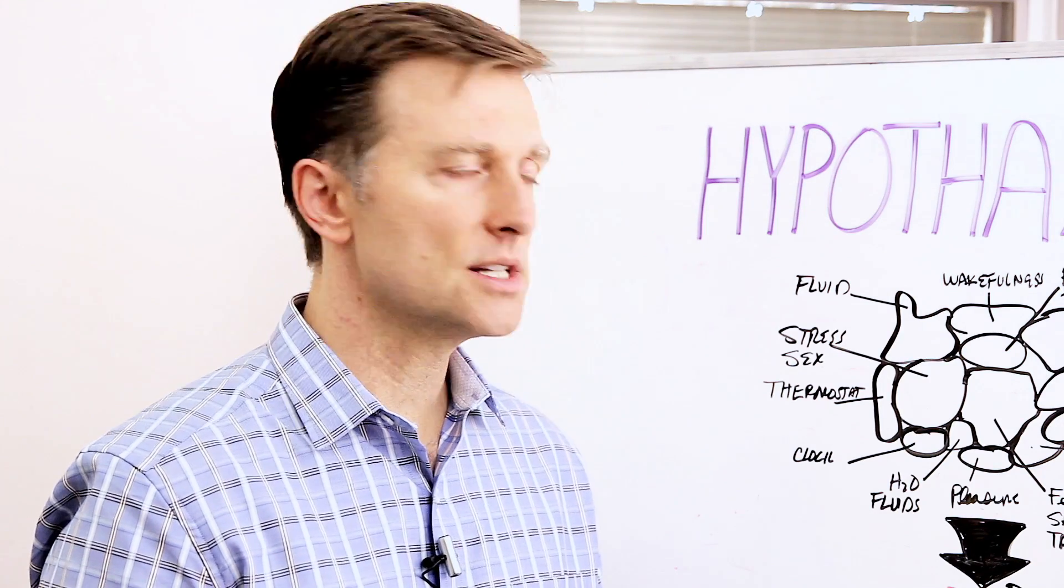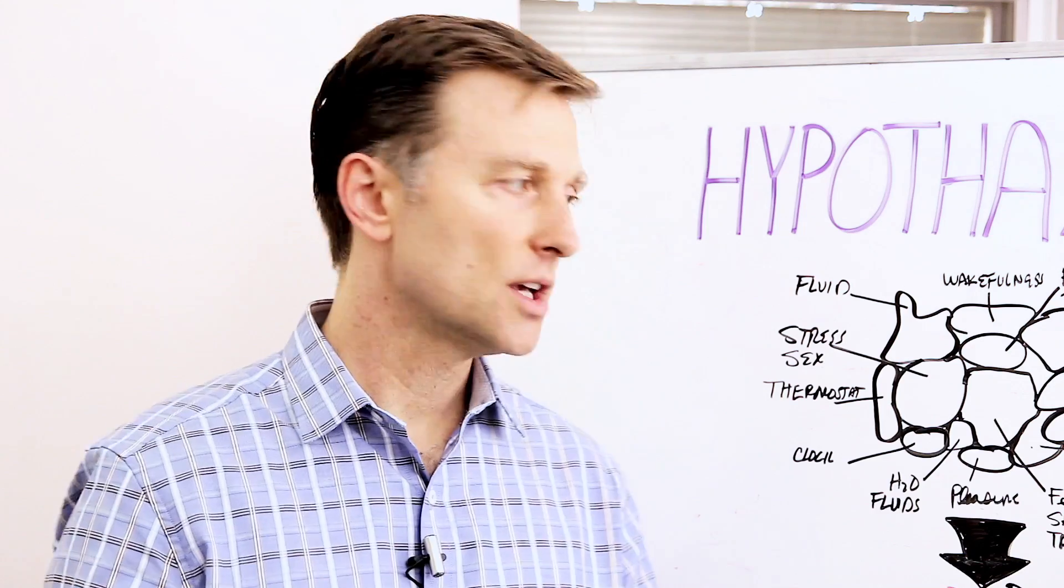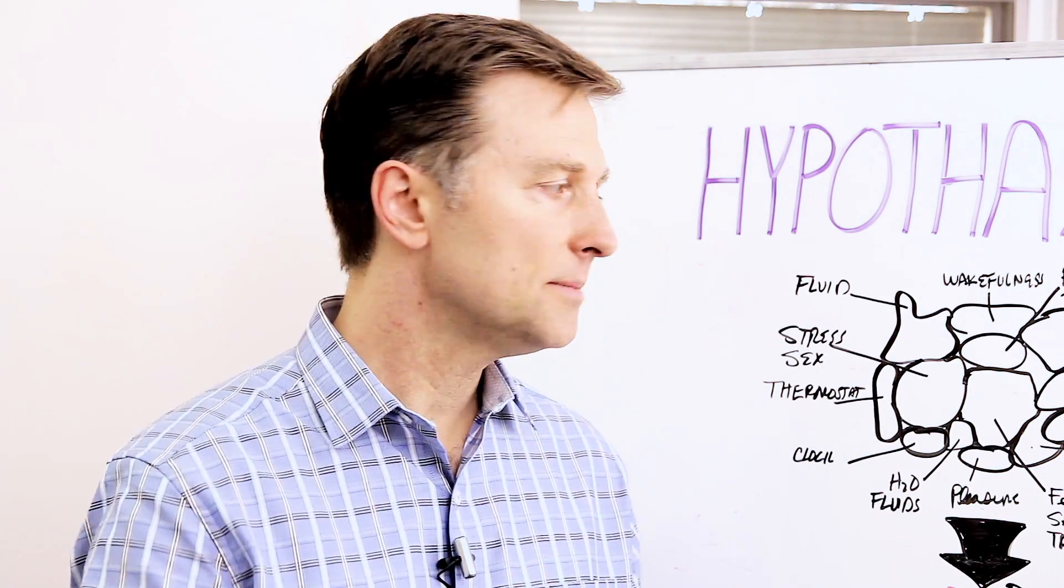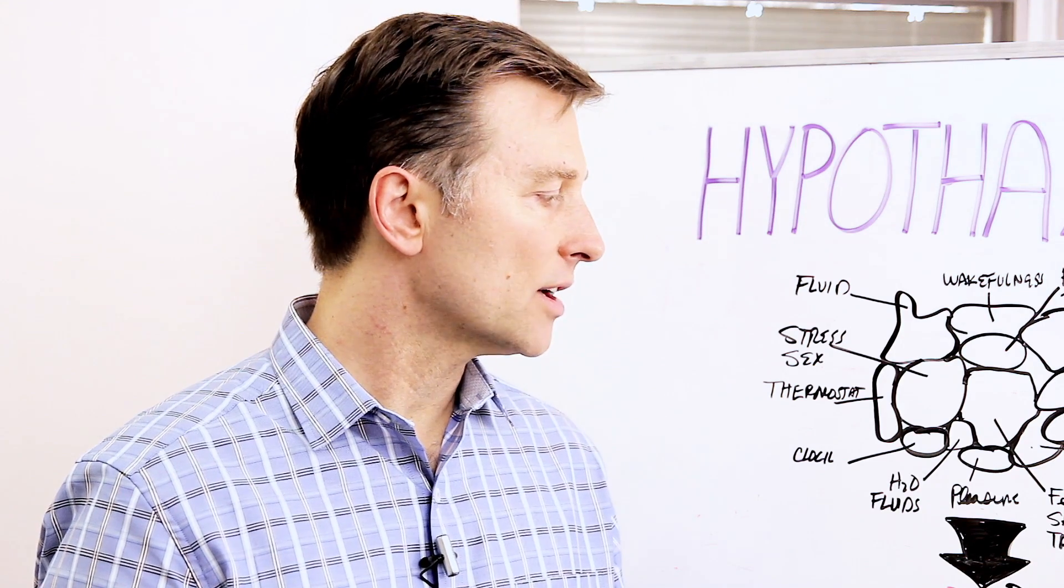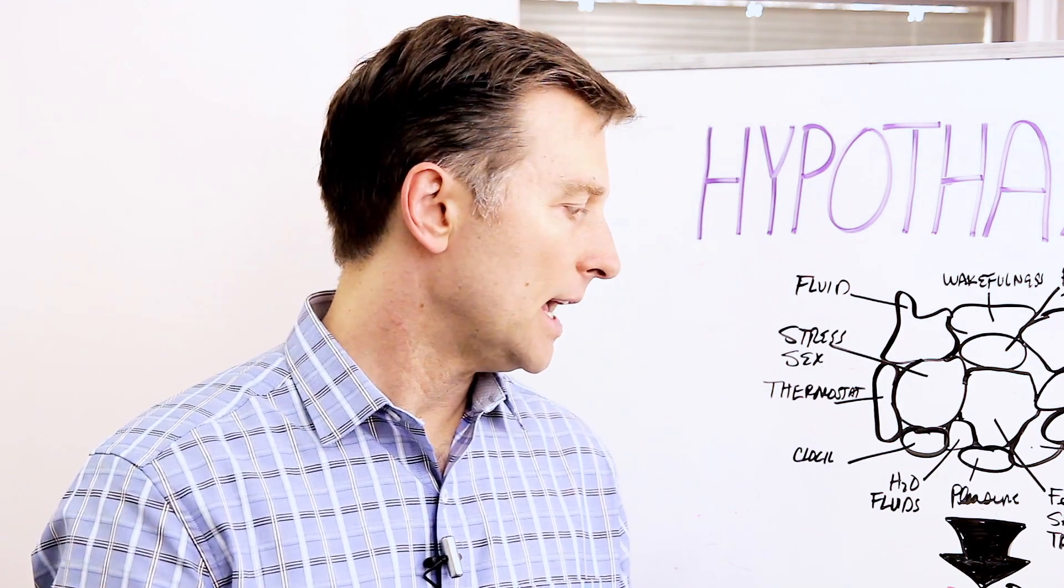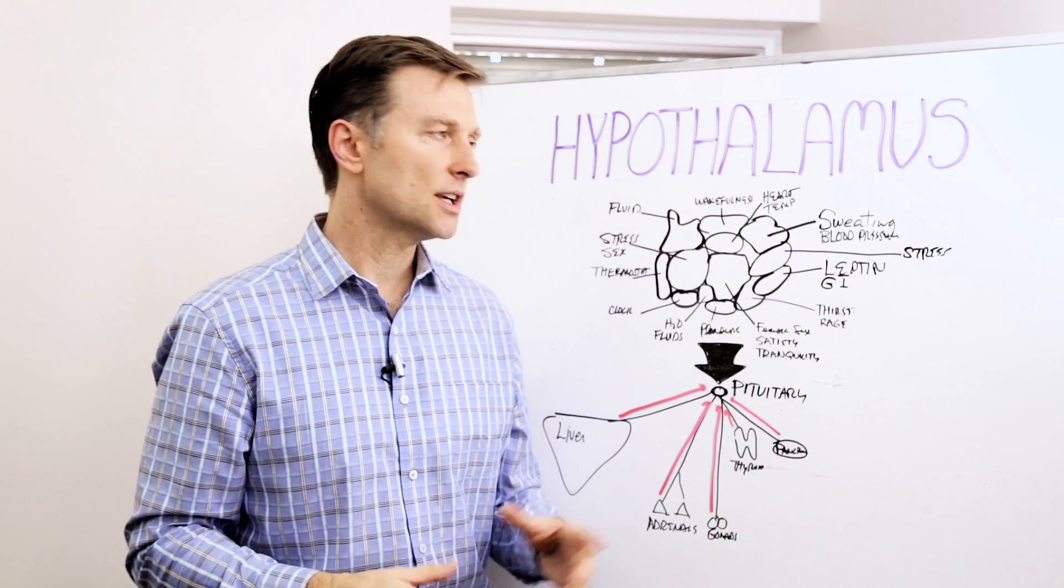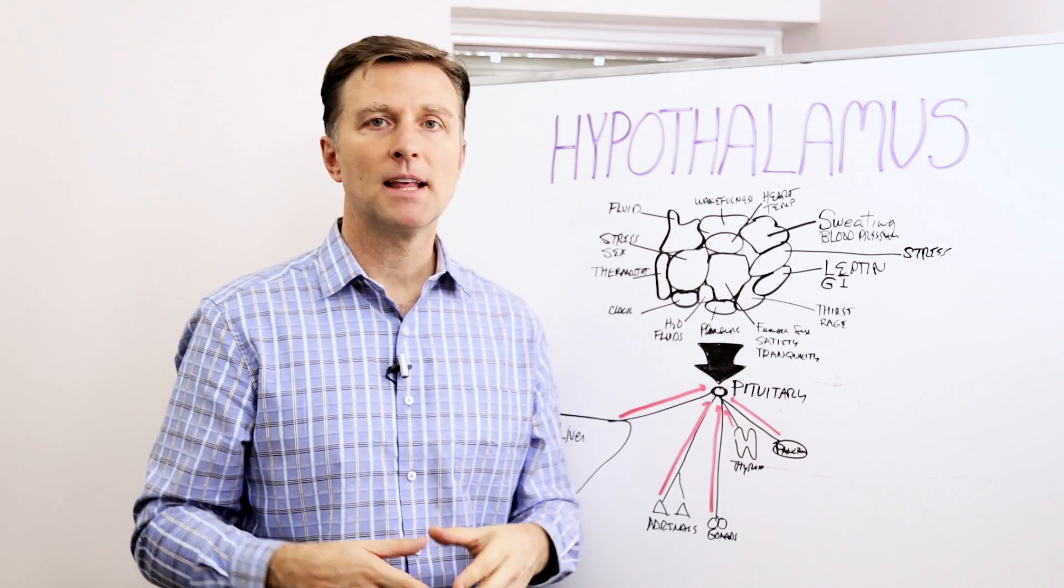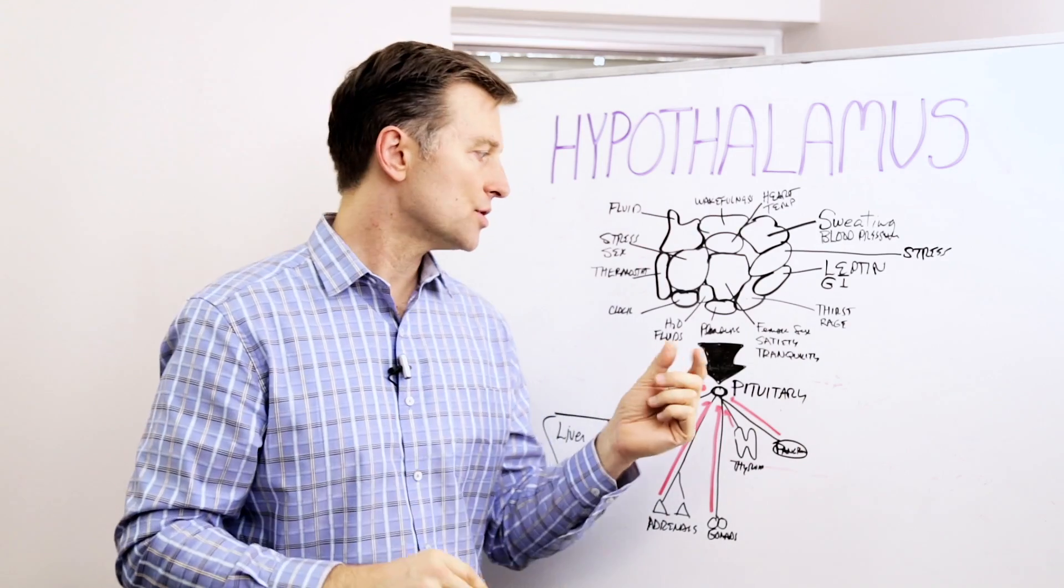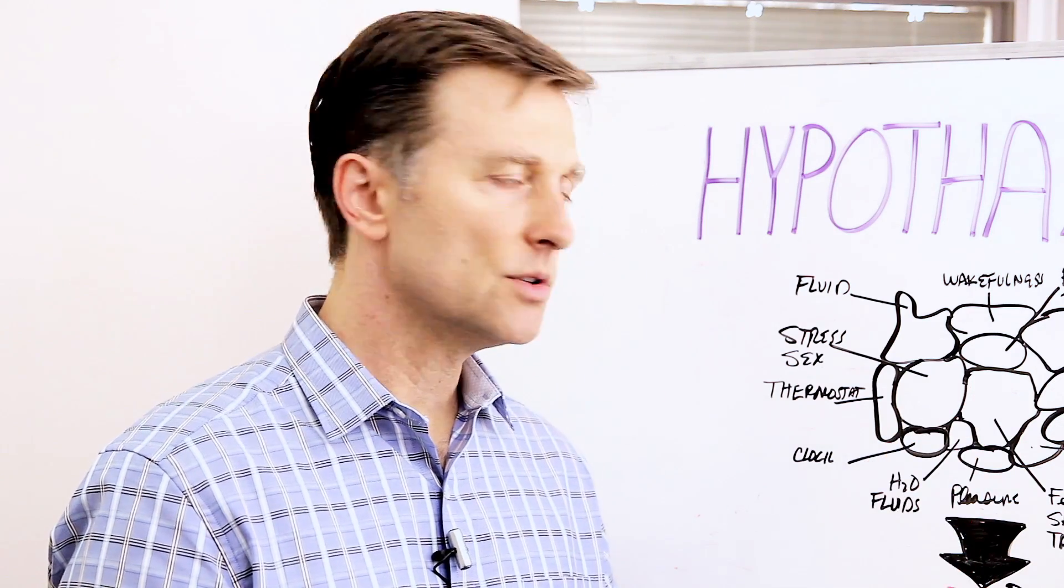So the endocrine system as a whole is the superior communication system that travels through the blood. That's the messages that go through the blood. So the endocrine system is composed of glands that make hormones or messages and the communication lines that happen through the blood. But what's interesting about the hypothalamus is that it's half gland and half nerve, nervous system.